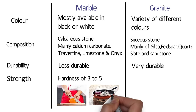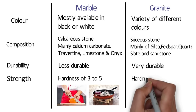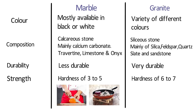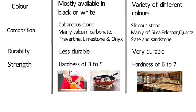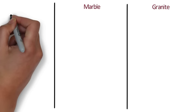Granite has a hardness of 6 to 7 on the Mohs scale. Granite easily resists scratches and damage from heat, making it an ideal material for kitchen counters both inside the home and outside. Granite is also hard and solid compared to the softer and more porous marble.